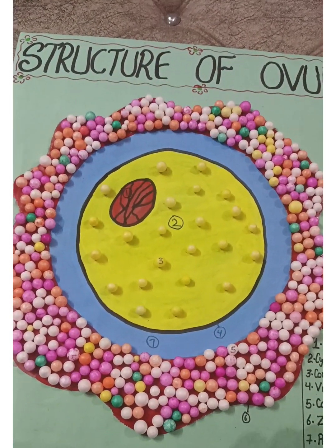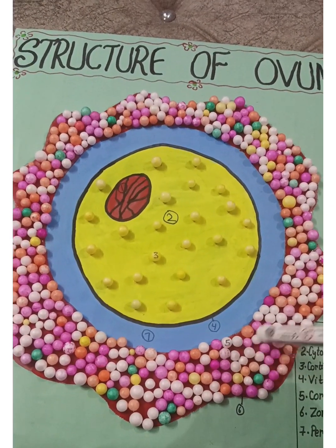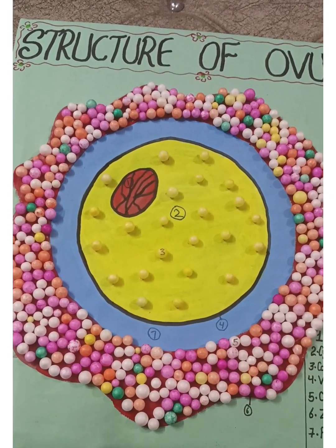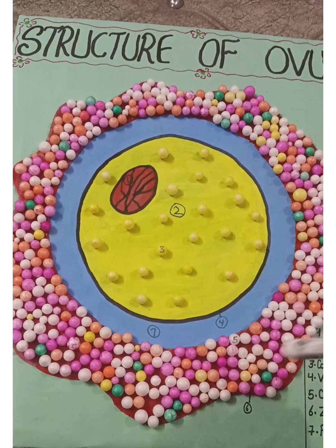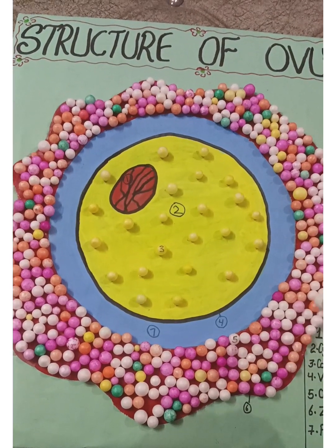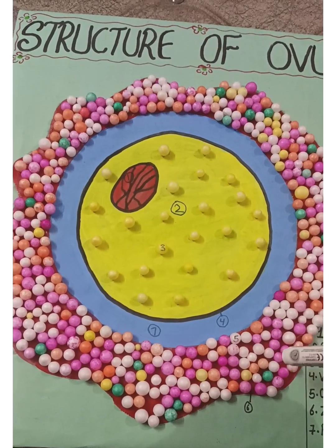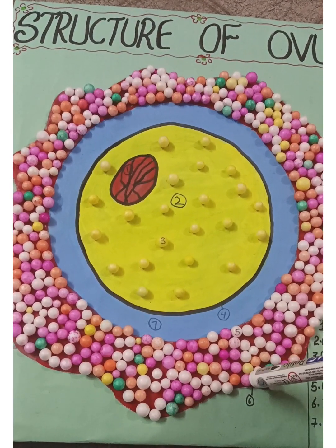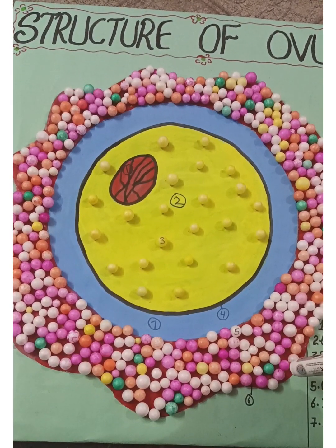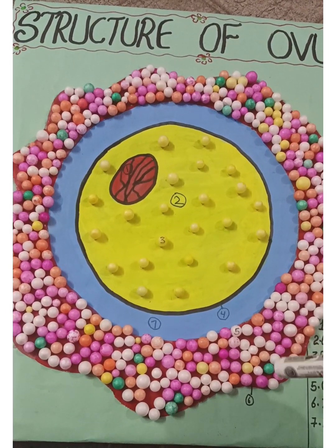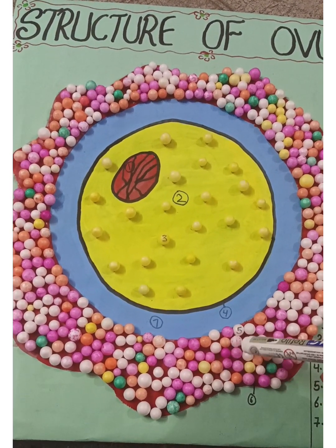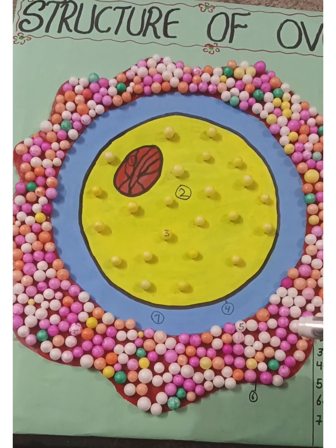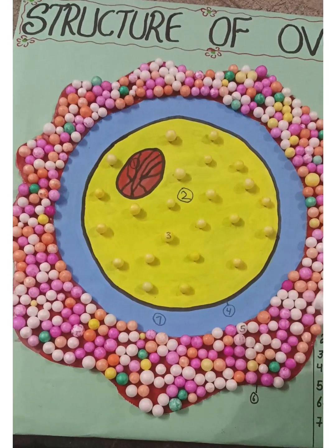The fifth part is the corona radiata. It is a layer of the egg that is formed of follicle cells. These follicle cells are joined together by hyaluronic enzyme.